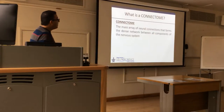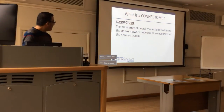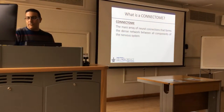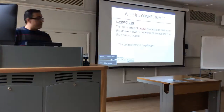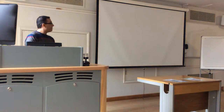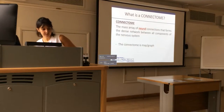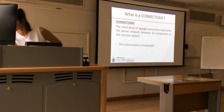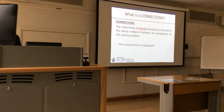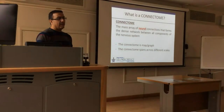The connectome on the most basic definition is the massive array of all neural connections — not only neuronal, but all neural connections. Every cell and every connection it forms in the brain. The connectome is a map, a graph that characterizes the connections that a region, a neuron, an assembly of neurons, or a network of neurons has. It spans across different scales — from a single cell, to the column level, to the whole brain level.